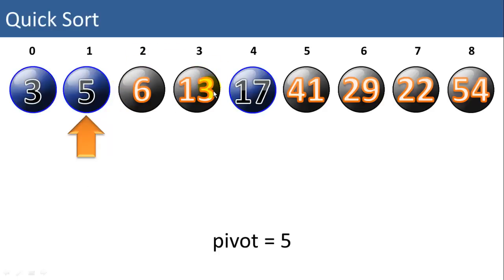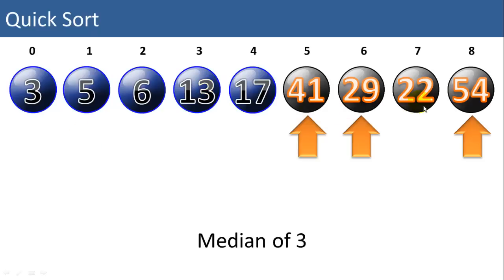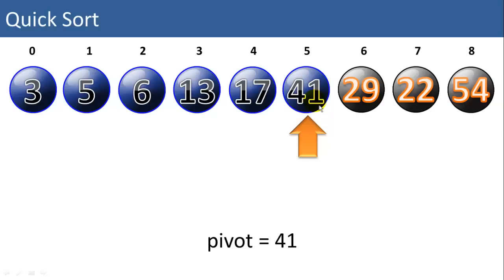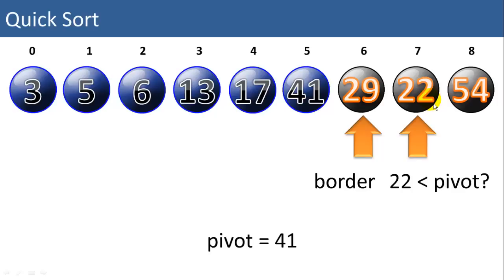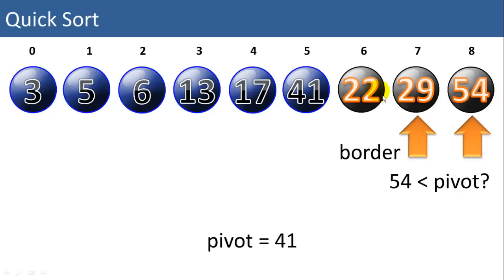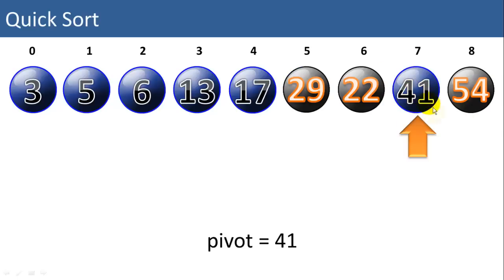Now let's jump over to the right side of the list. We're going to pick, again, the best of three pivots. Here we're going to pick 41, which is already in the leftmost position. We compare 22 to our pivot — is 22 less than the pivot? Yes, so we'll swap it with 29. Is 54 less than the pivot? No. So we can swap our 41 into position. Now we're finished with pivot 41. We have a sub-list to the left and a sub-list to the right, and we can do recursive calls on those.